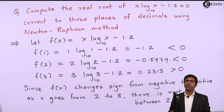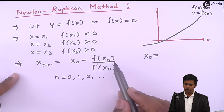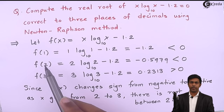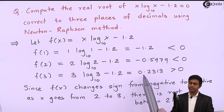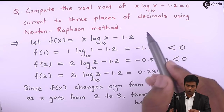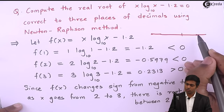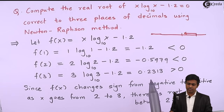We know the Newton-Raphson formula. To use it, we need f(x_n), f'(x_n), and the initial root x₀. We have two boundary values: f(2) = −0.5979 and f(3) = 0.2313. Since 0.2313 is closer to 0 on the number line, we choose x₀ = 3. Therefore, x₀ = 3.